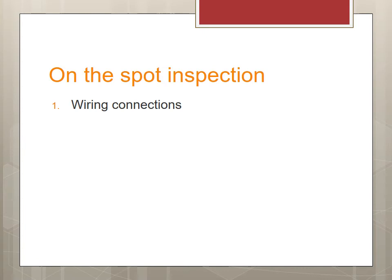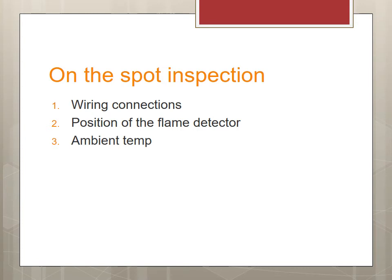For inspection, first check the wiring connections to make sure they are solid and insulation is not frayed. The position of the flame detector is very important — check the manual to confirm correct distance, location, and viewpoint of the flame. Verify ambient temperature is within the minus 40°F to 125°F range, and check the limit switches for function and continuity.